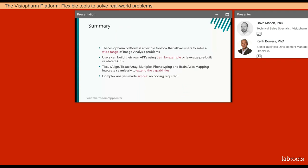To briefly summarise, the VisioPharm platform is a very flexible toolbox. It allows users to solve a wide range of image analysis problems, not just for today's research but for tomorrow's analysis too. Users can build their own apps using trained-by-example deep learning, or leverage pre-built validated apps from our app center — over 140 examples of individual apps validated and tested across a range of tissue types and staining. The capabilities of the core platform can be extended with extra modules such as Tissue Align, Tissue Array, the multiplex tools, and brain atlas mapping, all integrated seamlessly. This is complex analysis made simple.